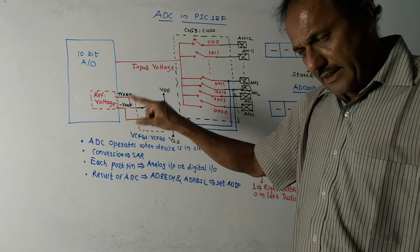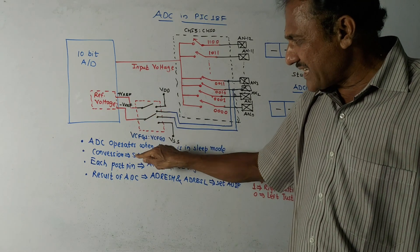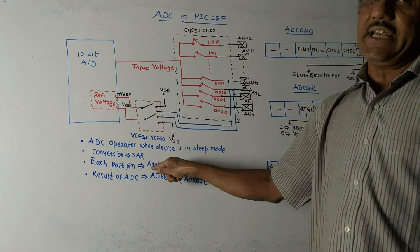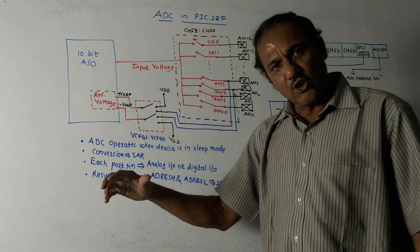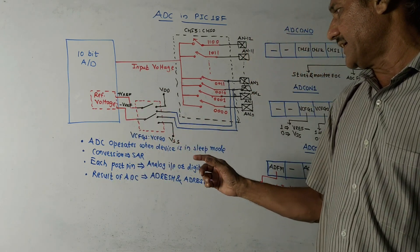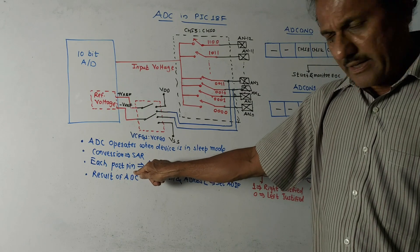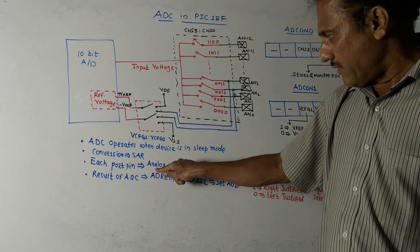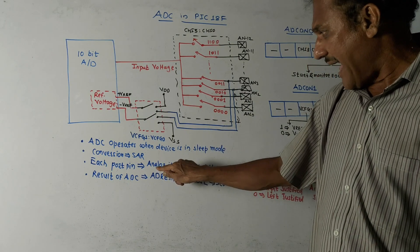Then the conversion is taking place with the help of successive approximation technique. It is one of the techniques to convert analog signal into digital signal. So each input port pin can be operated as analog input or digital input and output.